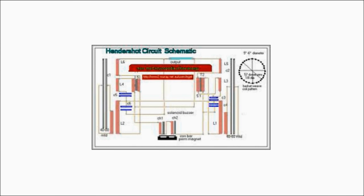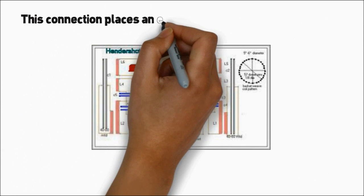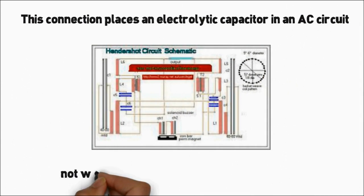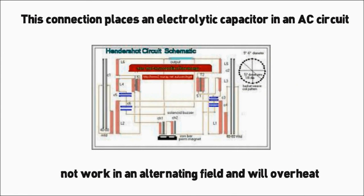The positive terminal is connected to one side of the output load. This connection places an electrolytic capacitor in an AC circuit. A polarized capacitor will not work in an alternating field and will overheat.